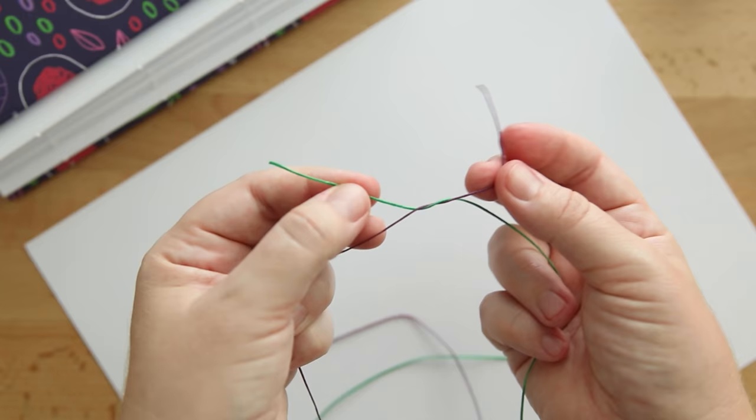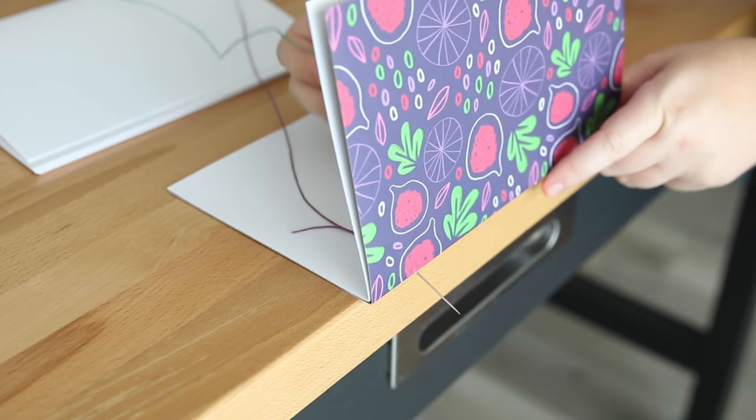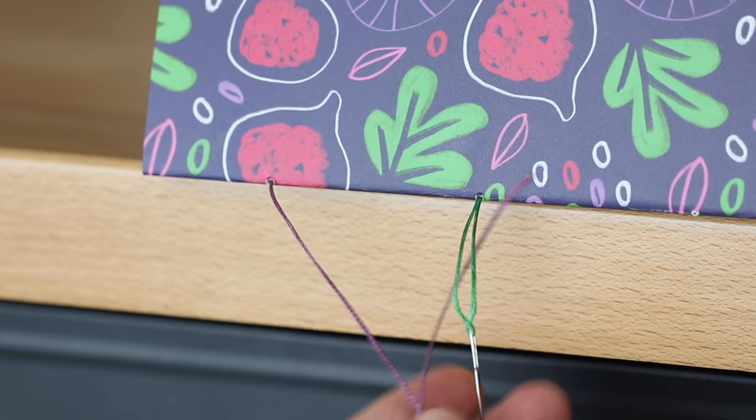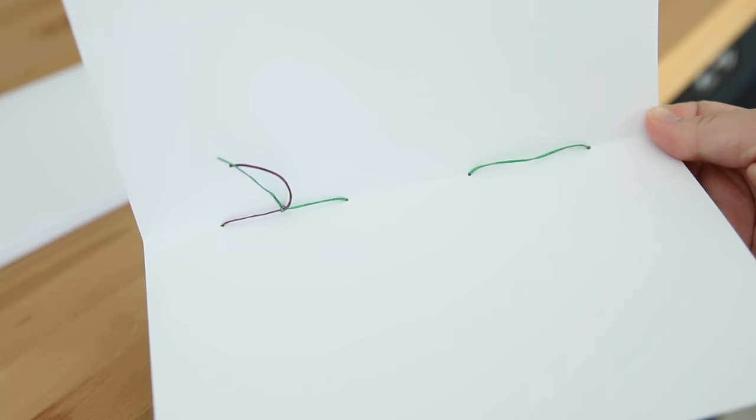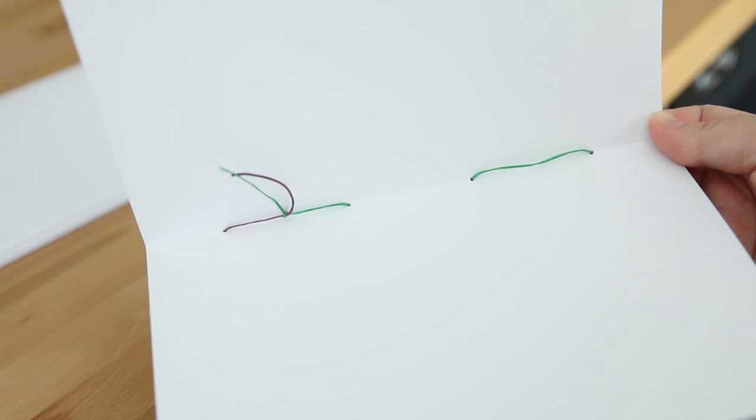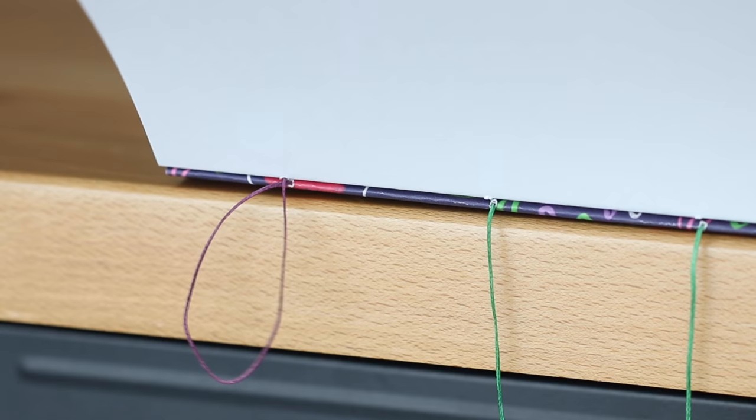Single threading a needle on each end of the thread. And for the two-color section, I'm tying the ends in a knot. To start binding, I'm going from the inside of the signature to the outside with both needles. And doing the same thing to the other section, which is the one color of thread. Making sure each needle has an even amount of thread.